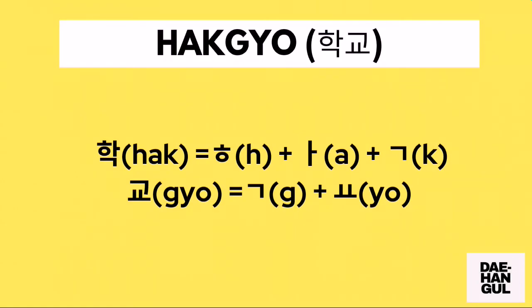How do we write this in Hangul? Let's start with the first syllable, hak. First we need to draw a hiyo character, followed by an a character, followed by a giyo character. For the second syllable kyo, we need to draw first a giyo character followed by the yo character. Then we combine these two syllables to form the Hangul of the word hakkyo.